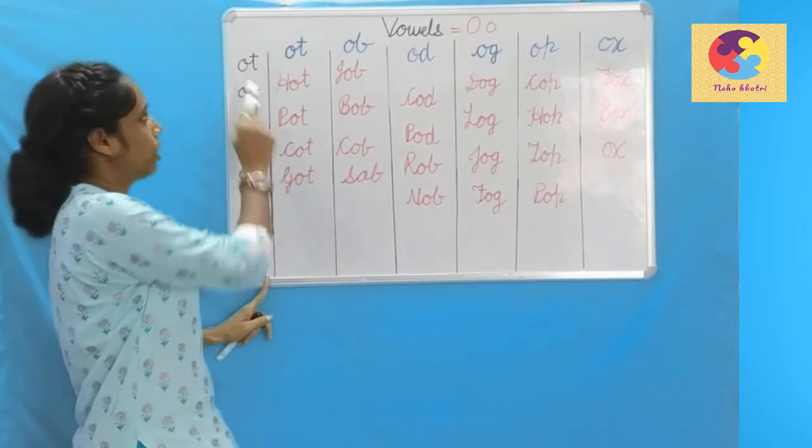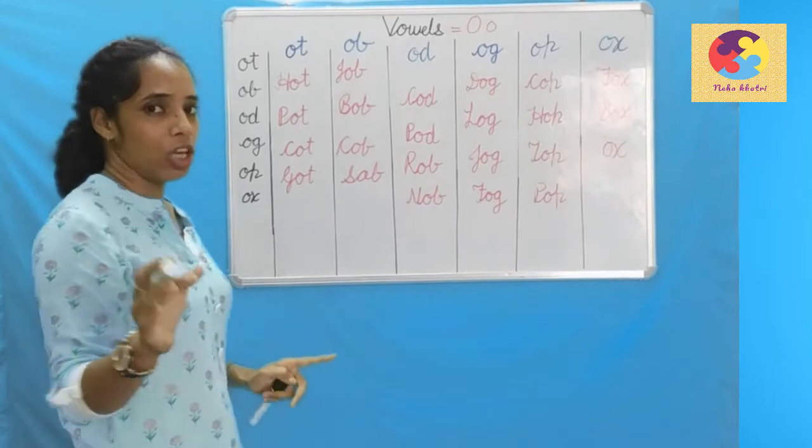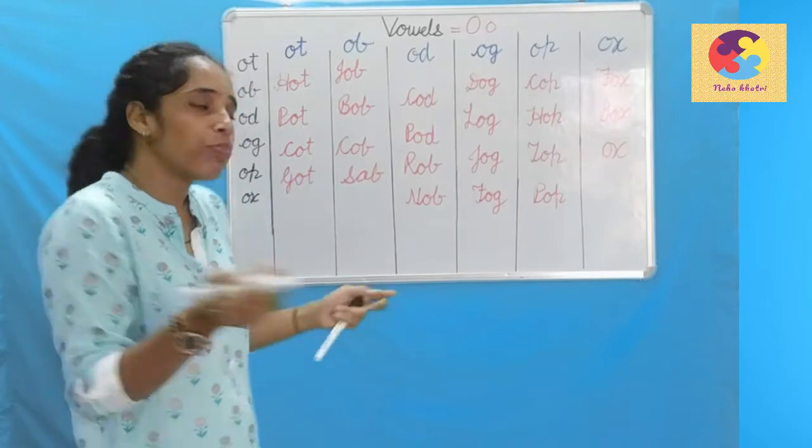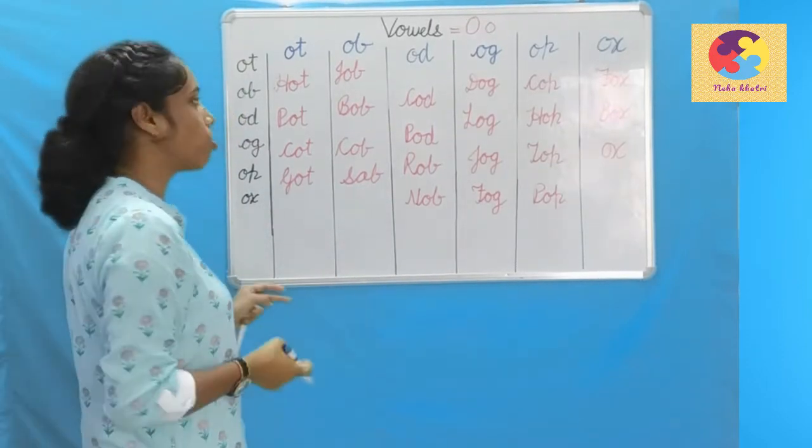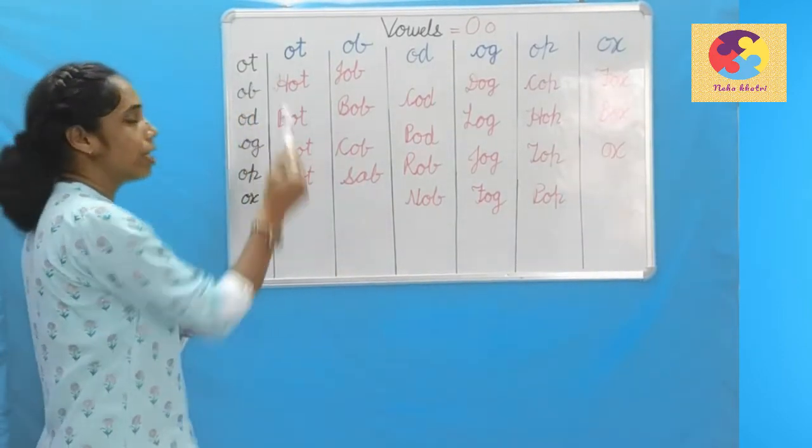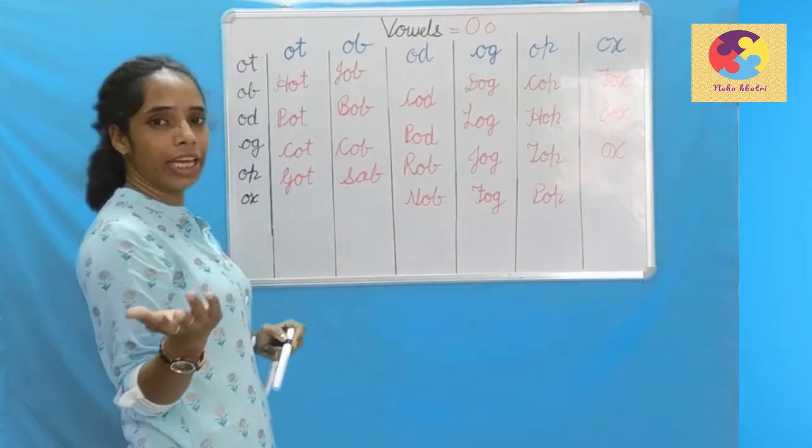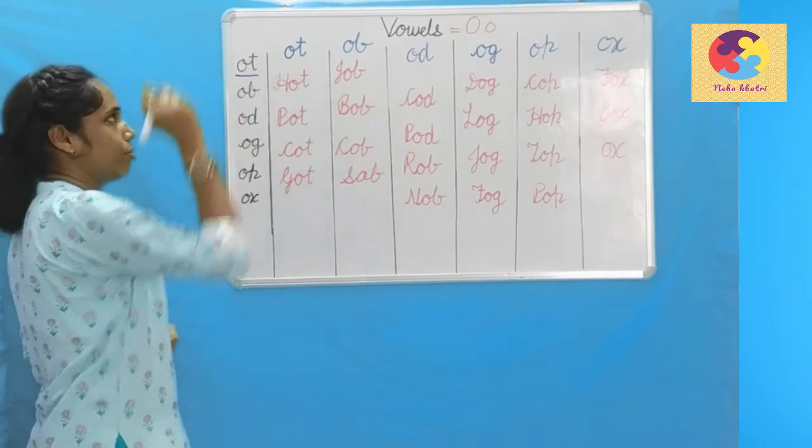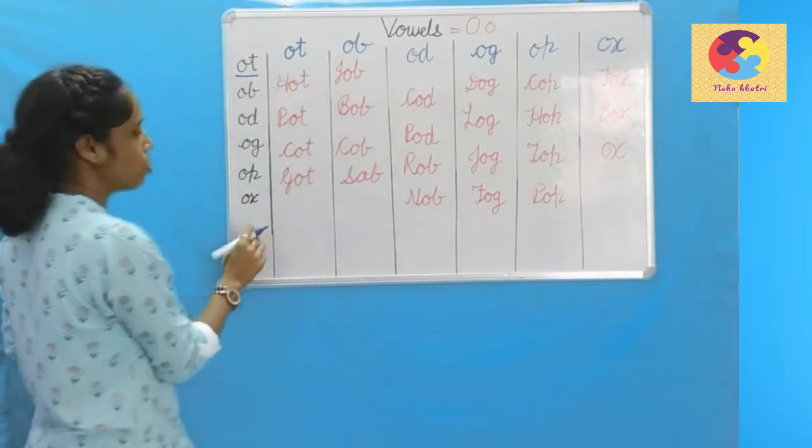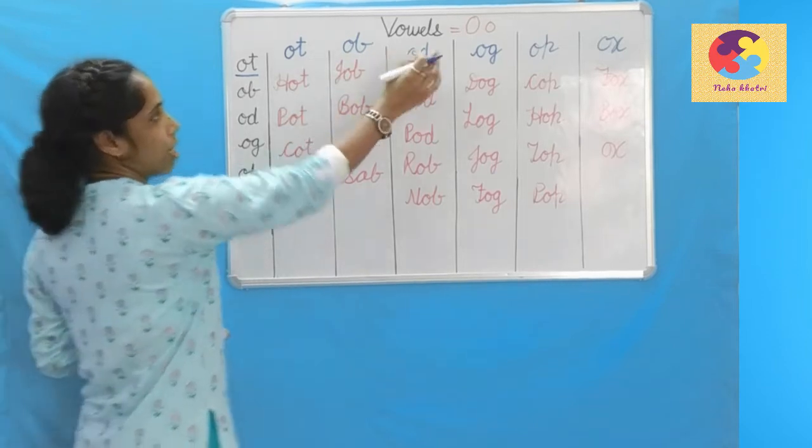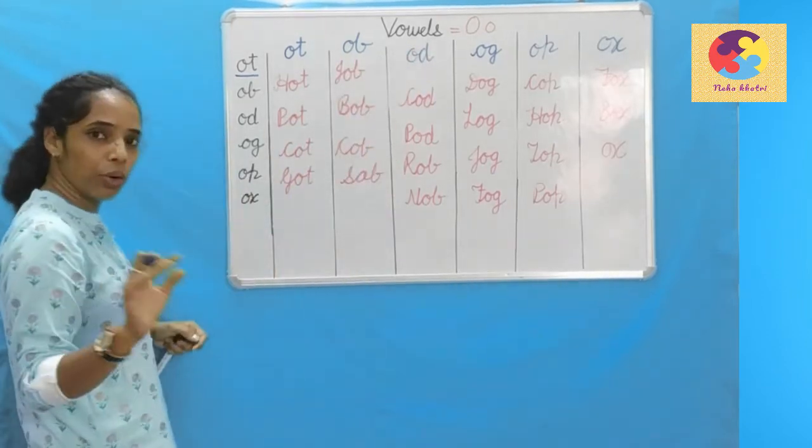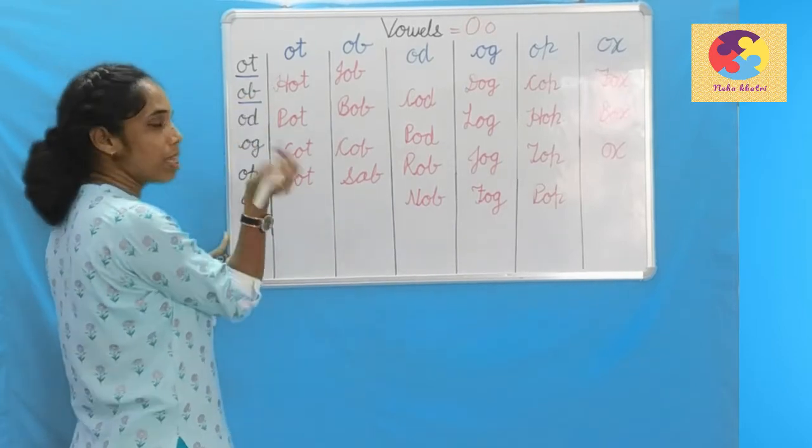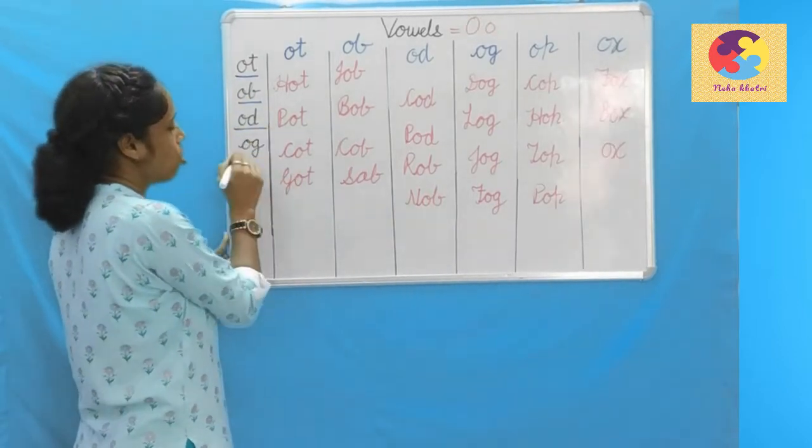O, T. Before I tell you, O sound is clear. O, T, OR. O, T, OR. This is called OR. O, T. O sound is clear.